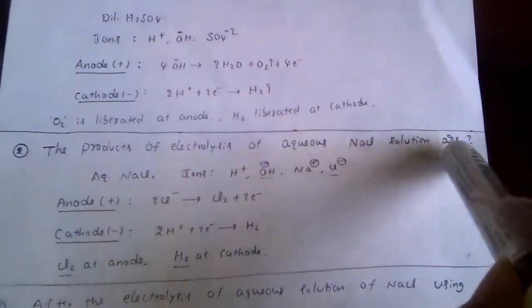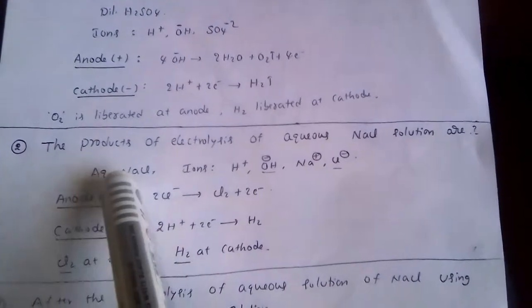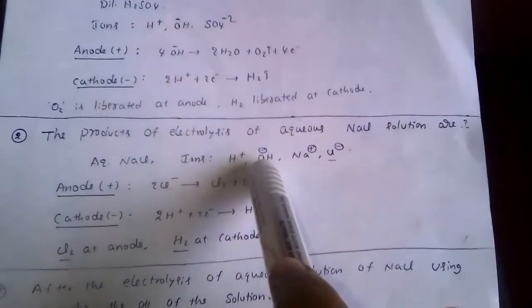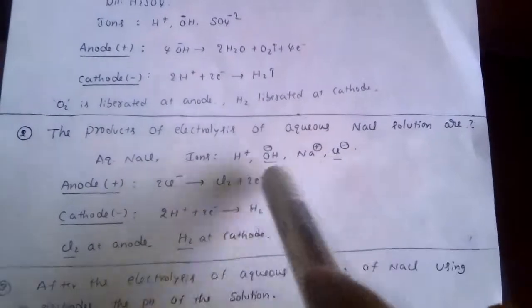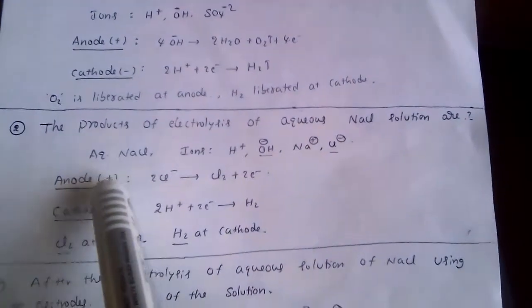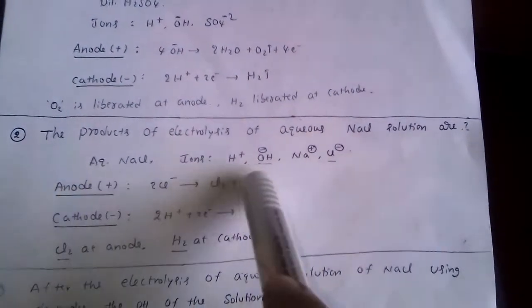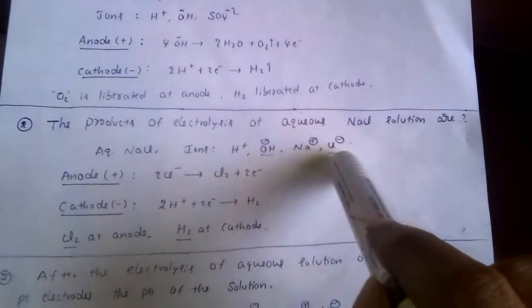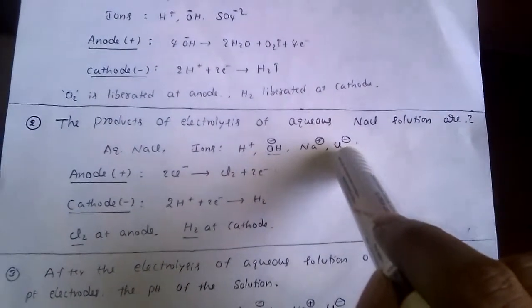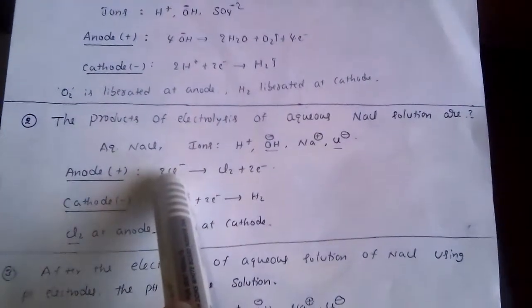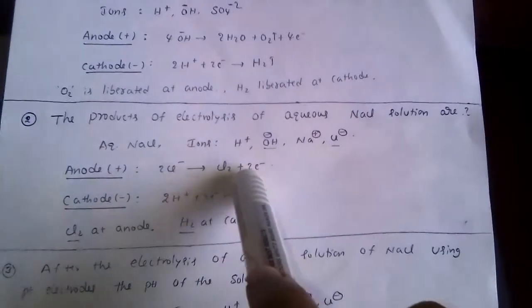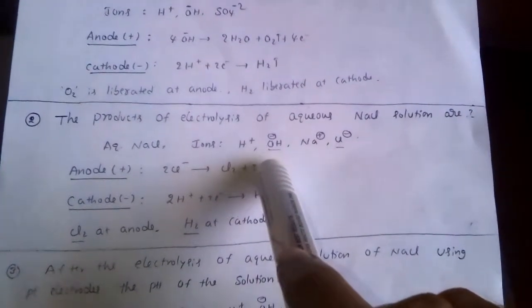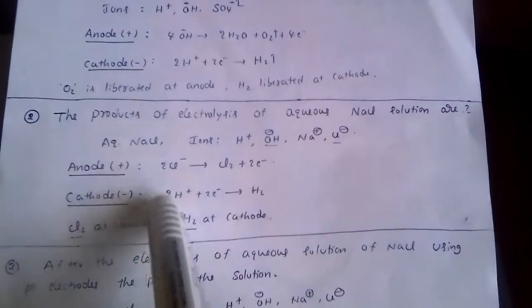The products of electrolysis of aqueous NaCl solution: aqueous NaCl contains ions H⁺, OH⁻, Na⁺, and Cl⁻. At the anode (positive), OH⁻ and Cl⁻ move towards it. Cl⁻ has less discharge potential, so it discharges first: 2Cl⁻ gives rise to Cl₂ + 2e⁻. Oxidation reactions always take place at the anode.